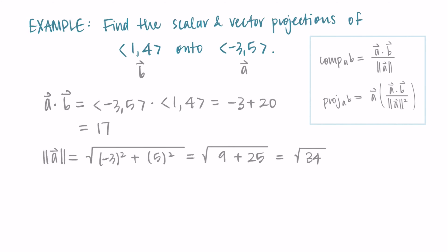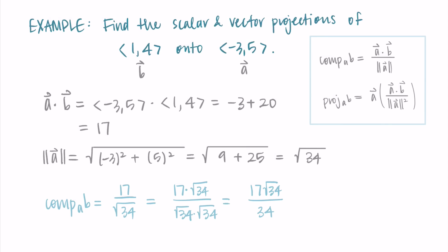Now I have all the values needed for both formulas. For the component of b along a, I take the dot product 17 divided by |a| = √34, giving 17/√34. This simplifies nicely since 17 is half of 34. Rationalizing by multiplying numerator and denominator by √34 gives 17√34/34, and since 17/34 = 1/2, the scalar projection is √34/2.